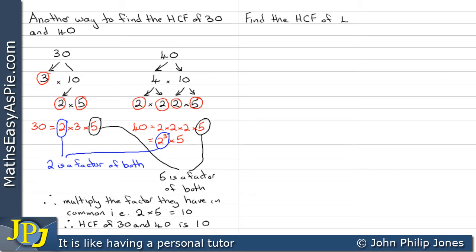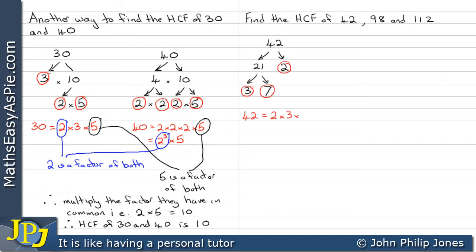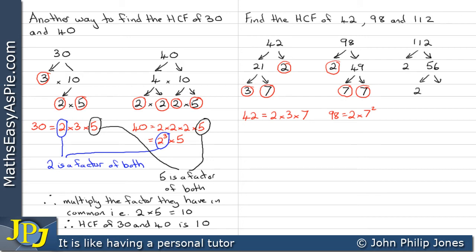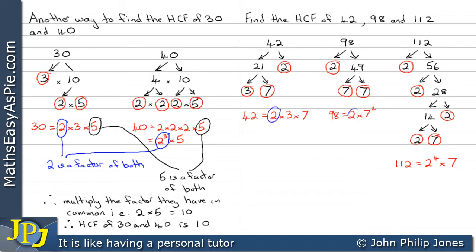Find the highest common factor of 42, 98, and 112. We use the factor tree and find each number expressed in terms of its prime factors. We can see that 42 becomes 2 times 3 times 7. We do the same for 98 — generating its factor tree — and we can see that it ends up as 2 times 7². Now we do the same for 112, producing its factor tree, and we end up with 112 being 2⁴ times 7.